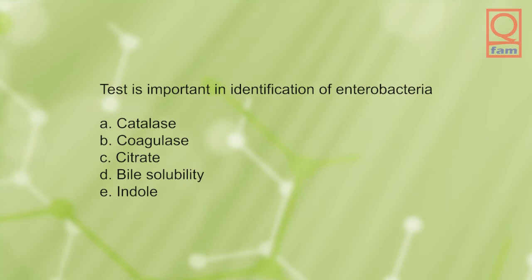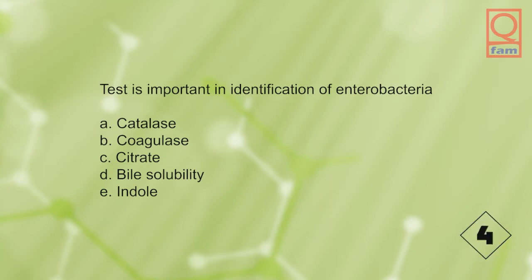Test important in identification of enterobacteria: A) catalase, B) coagulase, C) citrate, D) biosolubility, E) indole. The answer is C, citrate.